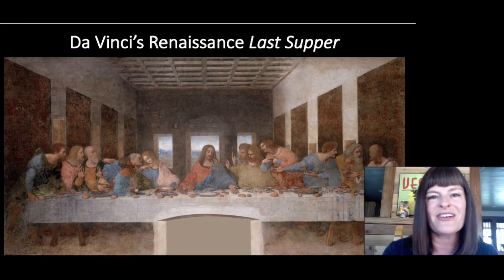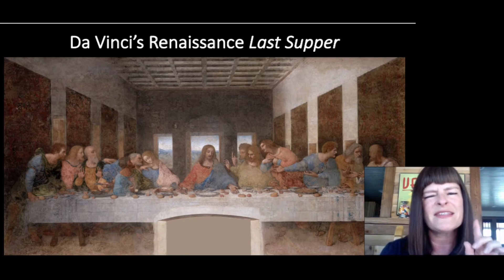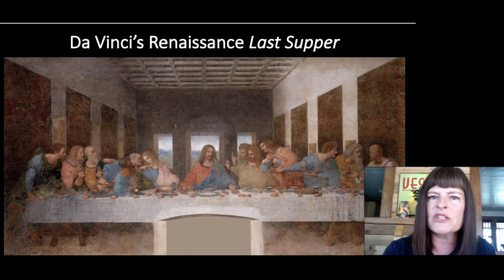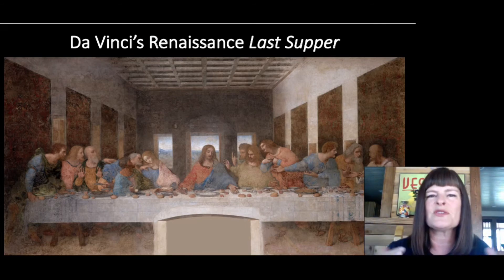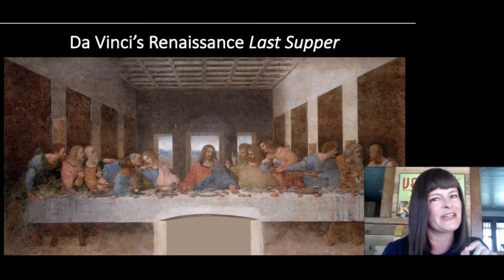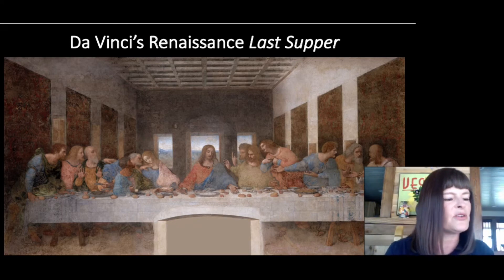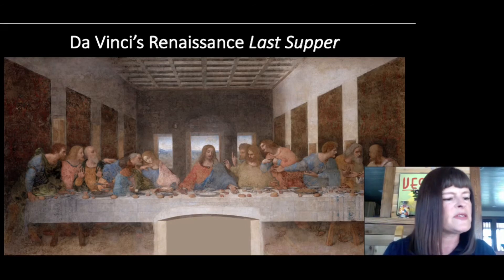Da Vinci emphasizes Christ's humanity and the humanity of the different apostles. Interestingly, he does subtly allude to a halo for Christ: there is an arch over the window above Christ's head, and the light coming from the window surrounds his head, hinting at a halo without actually painting a golden one around Christ or any of the other figures.